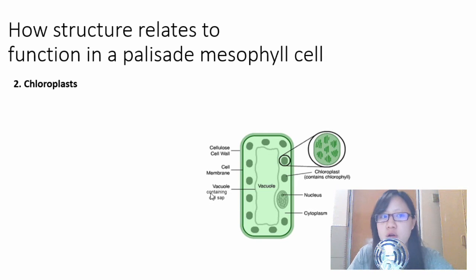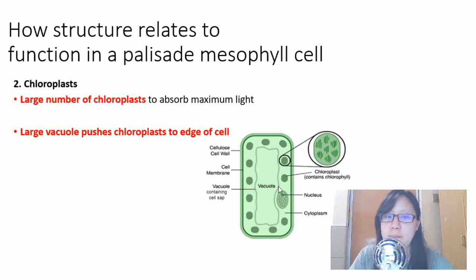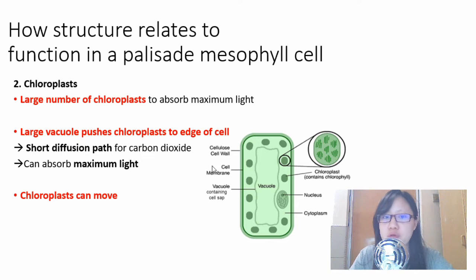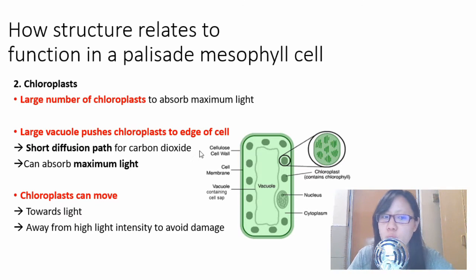Coming to chloroplasts - they have a large amount of chloroplasts to absorb maximum light. They have this huge vacuole that pushes the chloroplasts to the edge of the cell, so there's a short diffusion path for carbon dioxide, and they can absorb maximum light by being at the edge. Something interesting is that chloroplasts can actually move and rotate. They move towards the light when needed and away from high light intensity to avoid damage. I'm not saying chloroplasts have their own conscience, but the plant cell knows what to do. That's how structure relates to function in a palisade mesophyll cell.